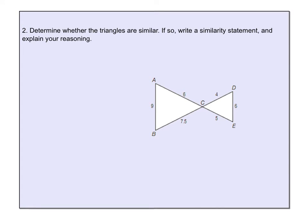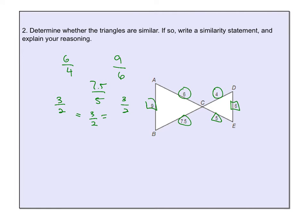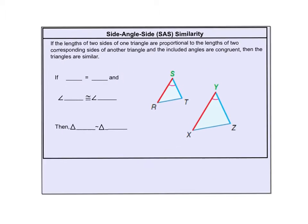For the SSS example, the rule is to match shortest side to shortest side. So we consider 6 over 4, then 9 over 6, then 7.5 over 5. All three simplify to 3 over 2 — yes, they all match up! So the similarity statement becomes triangle ABC similar to triangle DEC. Don't forget your triangle symbol to indicate the shape. The last one uses Side-Angle-Side, which you may have seen before.